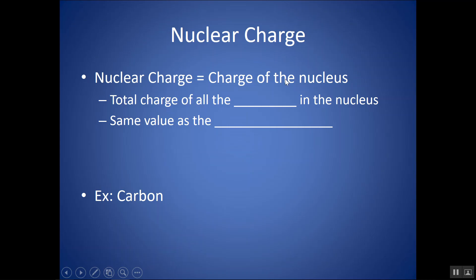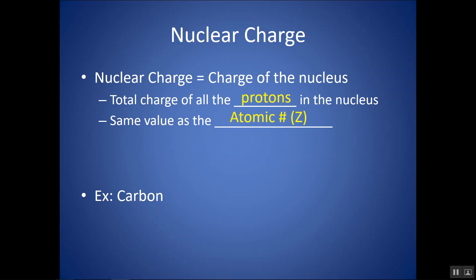Nuclear charge is just the charge of the nucleus. If we think about what's in our nucleus, we have protons and neutrons — which of those two have a charge? The protons are positive and the neutrons are neutral, so neutrons don't contribute to charge. The nuclear charge is just the charge of all the protons. You look at how many protons you have, and it will be positive that number, because each contributes plus one. So it has the same value as the atomic number.